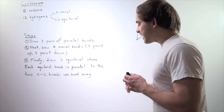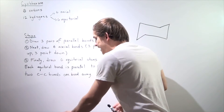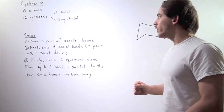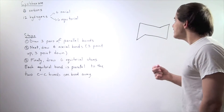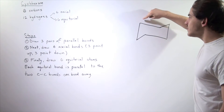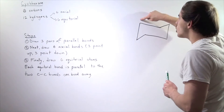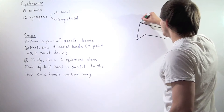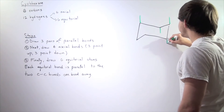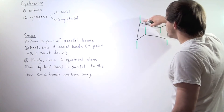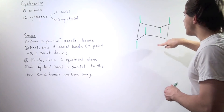Let's go to step two. In step two, we want to draw the six axial bonds — three of those pointing up and three pointing down. Now how do we know which one's pointing up and which one's pointing down? We always begin with this carbon — let's say this is carbon number one. Carbon number one, the axial bond goes upward. Then the next one goes down, and we alternate up, down, up, down until we get back to carbon one.